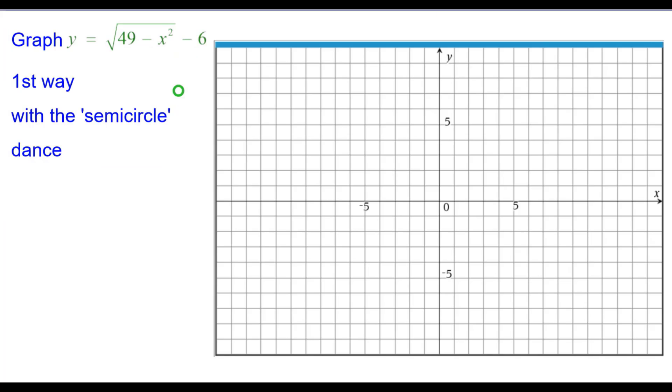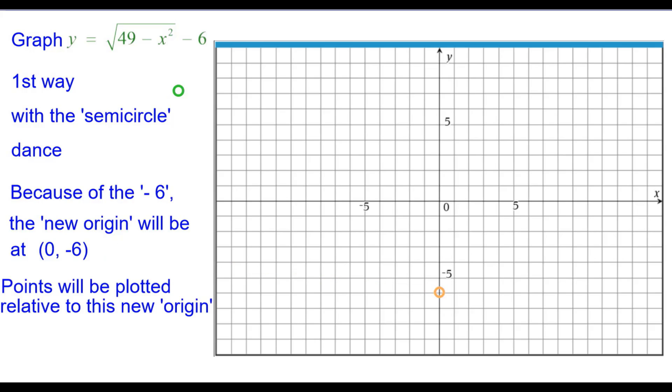First way is we're going to use what I call the semicircle dance. Because of the minus 6, the new origin, instead of being at (0, 0), will be at (0, -6). We'll plot that. And all the points will be plotted relative to this new origin that's in orange.